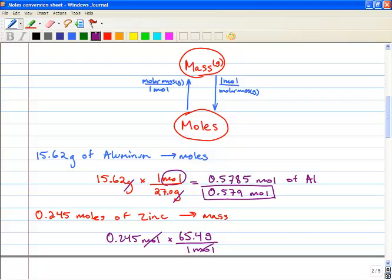Our moles cancel, and we're left with grams. And we get 0.245 times 65.4, and we get 16.04 grams of zinc.